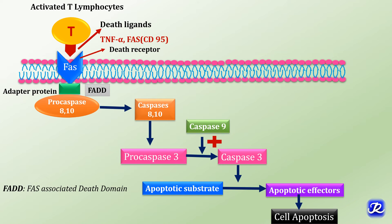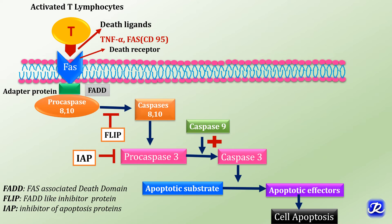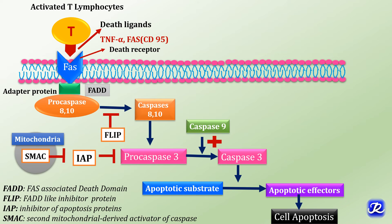The extrinsic pathway is regulated by FLIP (FADD-like inhibitory protein), which inhibits the conversion of pro-caspases 8 and 10 into active caspases 8 and 10, thus preventing the cascade and apoptosis. Another regulatory protein is IAP (inhibitor of apoptosis proteins), which inhibits pro-caspase 3 conversion into the effector caspase. This inhibitory effect of IAP can itself be stopped by SMAC (second mitochondria-derived activator of caspases), which is released by mitochondria.